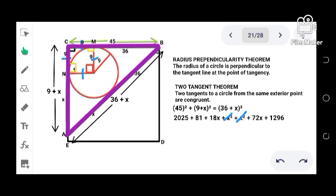x squared can be eliminated, so what is left will be 18x minus 72x is equals to 1296. Then we transpose 2025 to the right side, that becomes negative 2025. Same thing with the 81, that becomes minus 81. Simplifying, we have negative 54x is equals to negative 810.